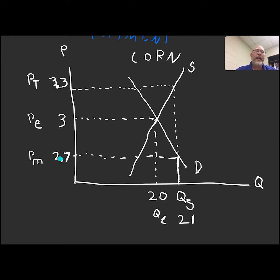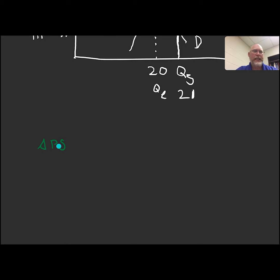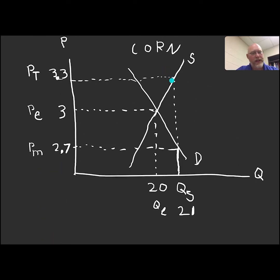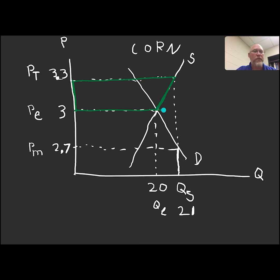Now I want to draw the welfare impacts before doing any math. We're going to find the change in producer surplus, delta PS. We're looking for this trapezoid bounded by the supply curve, with height equal to the change in price from the equilibrium price up to the target price PT, and the two base lengths being QE and QS. That green trapezoid is the change in producer surplus. The farmers sell for $2.70 and the government cuts a check for the difference between $3.30 and $2.70.